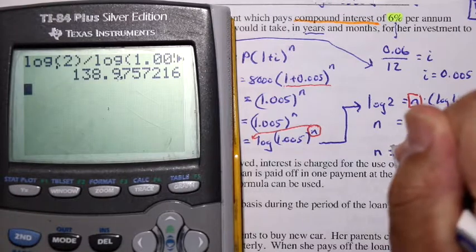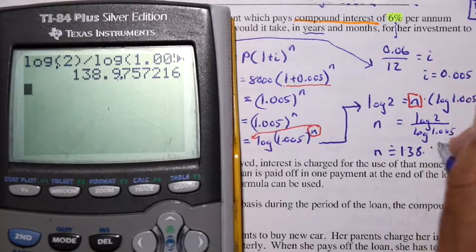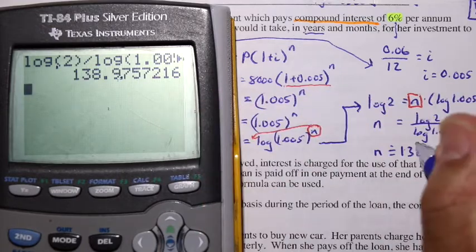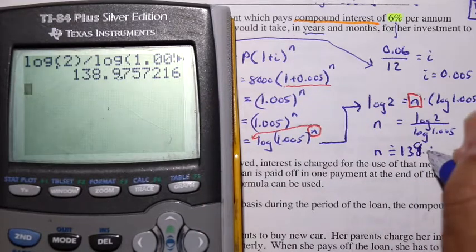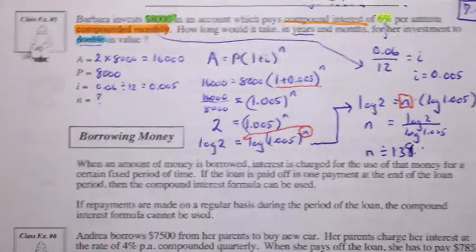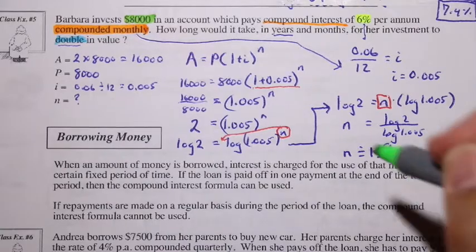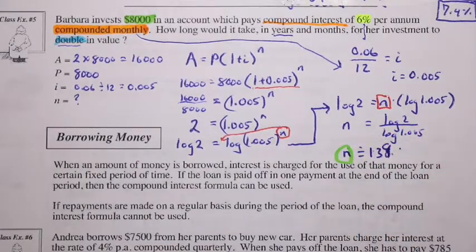So n is equal to approximately 138.97. But rounded up, this is actually going to be 139. So if n is a value of 139, what does that mean? Well, when we're talking about n, we're talking about compounding periods.